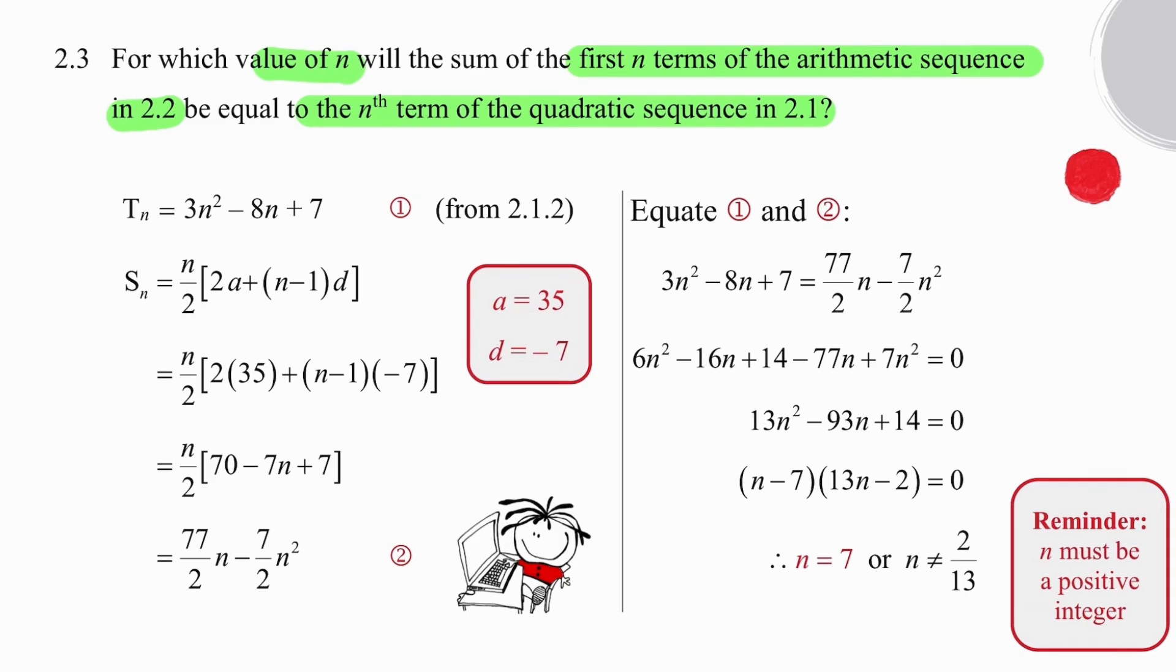We know from our solution to question 2.1.2 that the general term of the quadratic pattern is given by 3n² minus 8n plus 7. We also know that we can use the formula for the sum of an arithmetic sequence and work out that the sum of n terms produces an outcome of 77 over 2 times n minus 7 over 2 times n². Those two formulae need to be equated because we are trying to find the value of n for which the first n terms of the arithmetic sequence will equal the quadratic sequence.